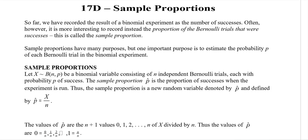This is our last exercise, and it will be a long one. We're doing sample proportions. So far we have recorded the results of a binomial experiment as the number of successes, but it is more interesting to record instead the proportion of Bernoulli trials that were successes — this is called the sample proportion. Sample proportions have many purposes; one important purpose is to estimate the probability p of each Bernoulli trial.